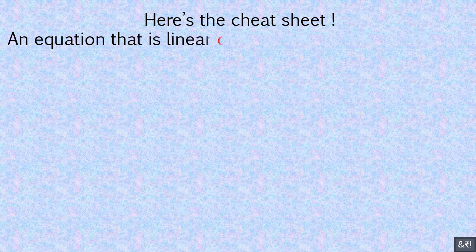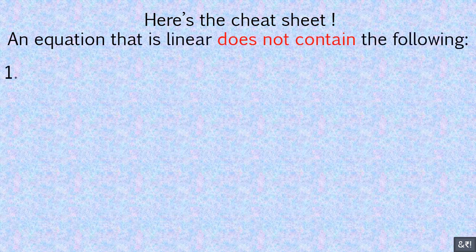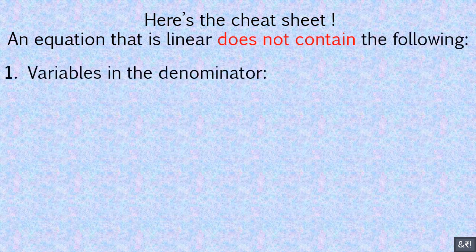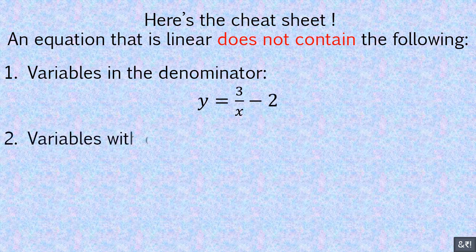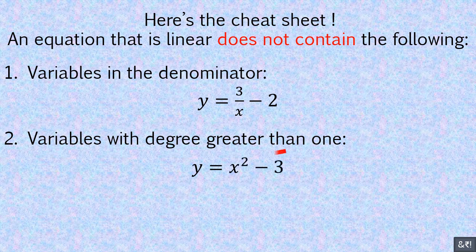Here's the cheat sheet. An equation that is linear does not contain the following: 1. Variables in the denominator. 2. Variables with degree greater than 1. 3. Product of variables.